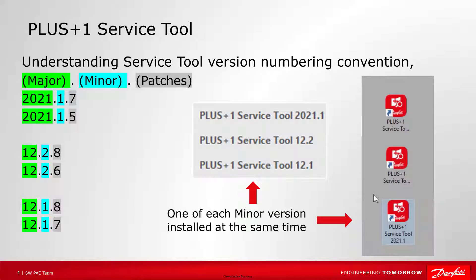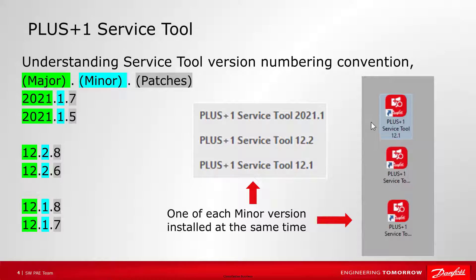When you have the service tool installed, you will have an icon on your desktop. I'm using version 2021.2, which at the time of this video was the latest version. We recently changed the version numbering convention. Previously it was a numerical value increasing with major and minor changes in patches. In 2021, we switched to setting the major version to the year it is released. You can have multiple versions installed as long as they are not the same minor version.